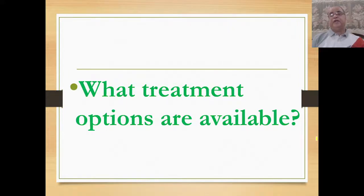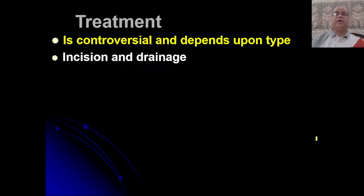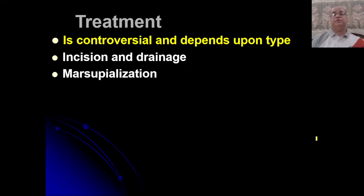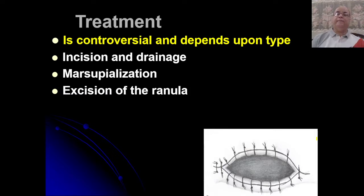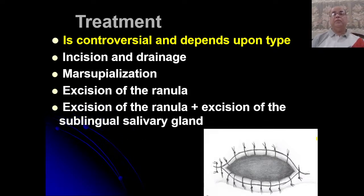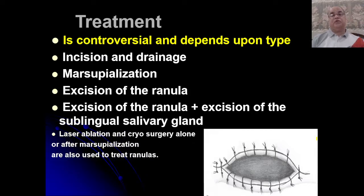Surgical treatment is the treatment of choice for ranula, with different options available. Incision and drainage and marsupialization have a high recurrence rate. Excision of the ranula, especially for simple ranula confined to the oral cavity, can achieve 100% success. The treatment of choice is excision of the ranula along with excision of the sublingual salivary gland. Laser ablation and cryosurgery are also used in isolation or in combination after marsupialization.